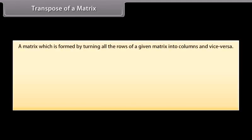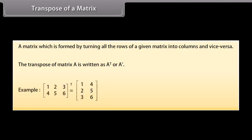Transpose of a matrix. A matrix which is formed by turning all the rows of a given matrix into columns and vice versa. The transpose of matrix A can be written as A'. For example, the transpose of a matrix with first row 1, 2, 3 and second row 4, 5, 6...